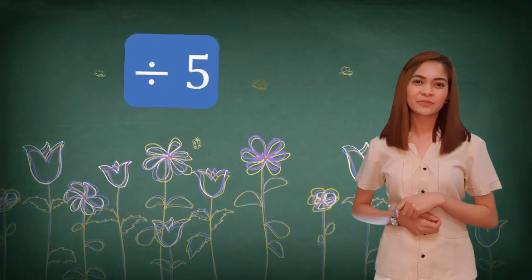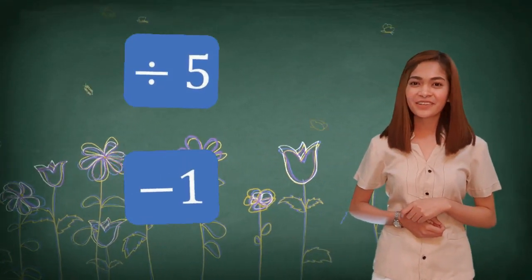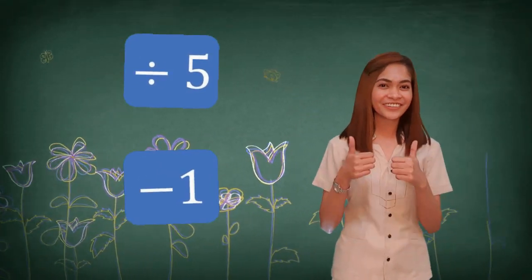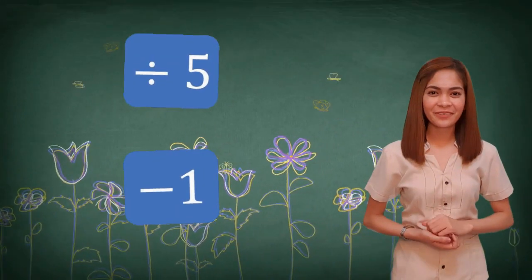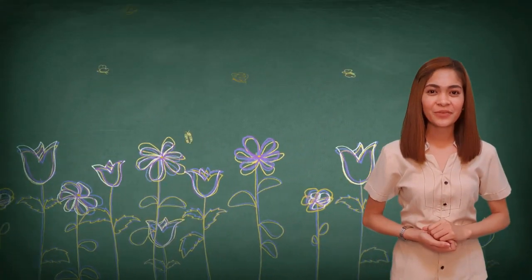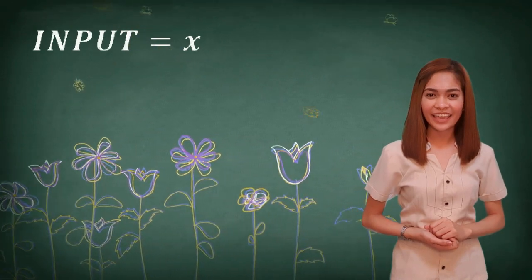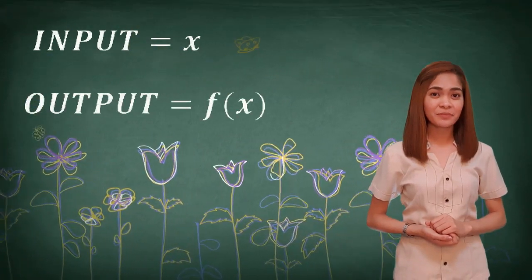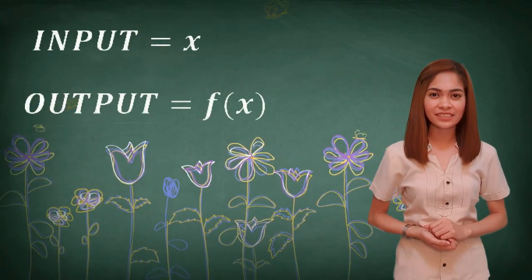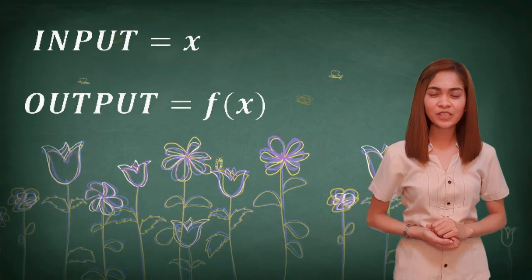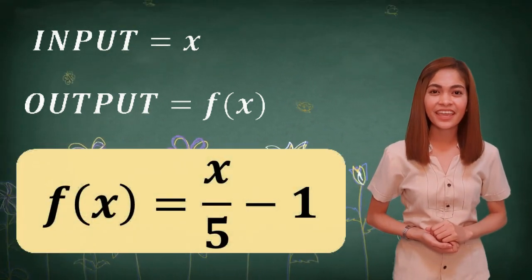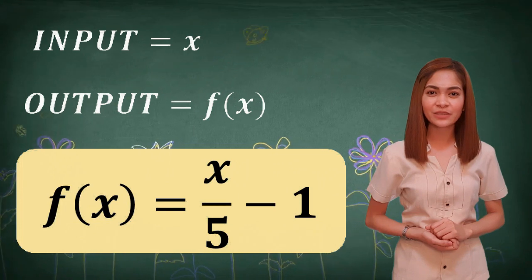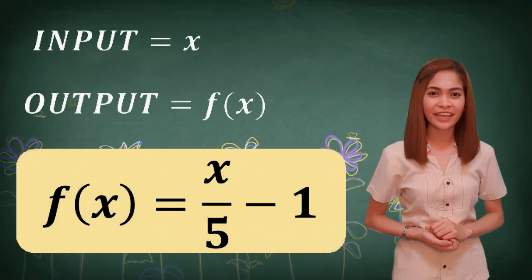If your answer is divide by 5, then subtract by 1, then you are correct! Let's write that into an equation. We let the input be the variable x and the output be f(x). So the rule or the function of this machine is represented by f(x) = x/5 − 1.